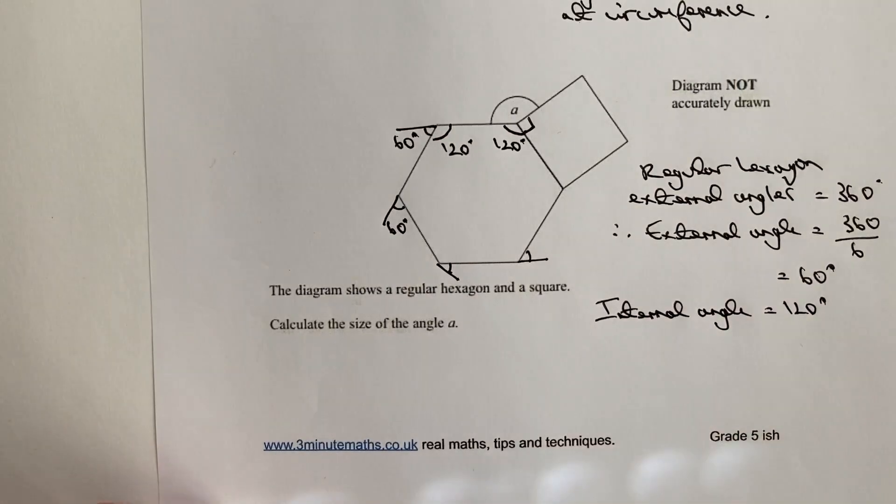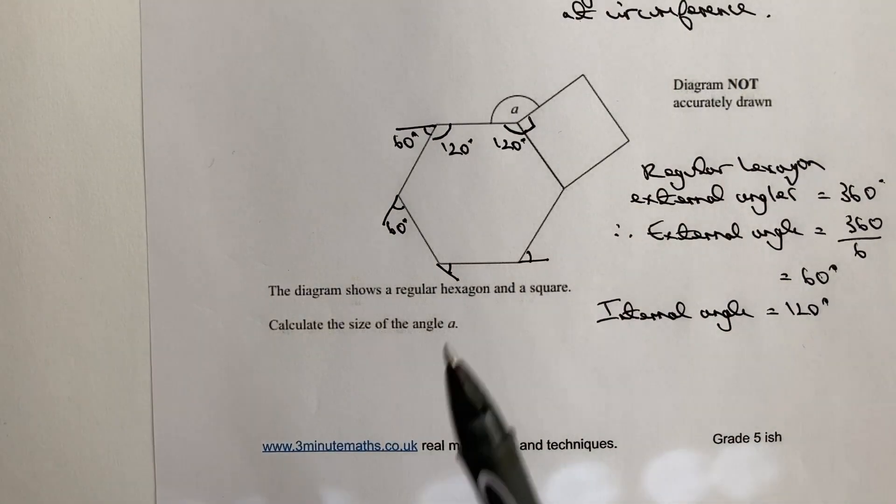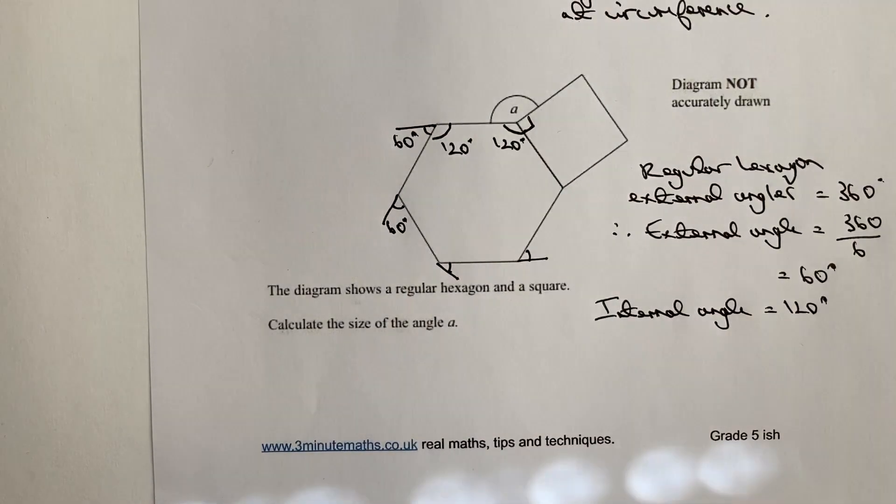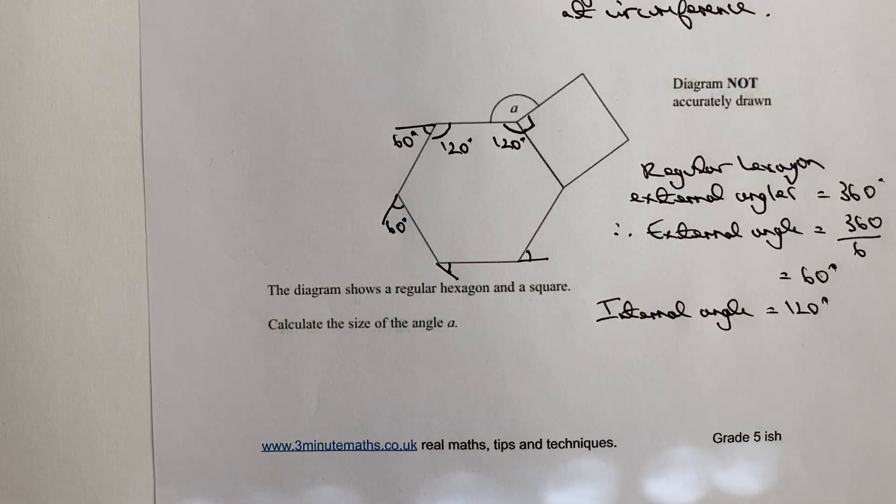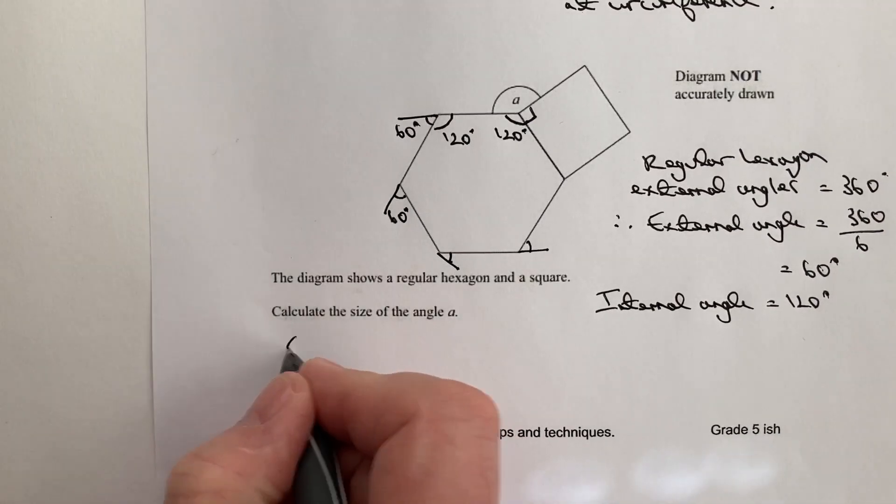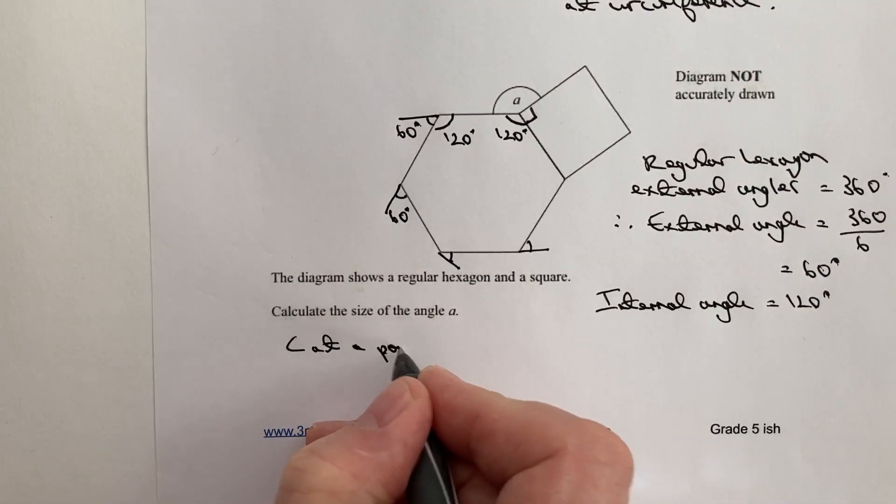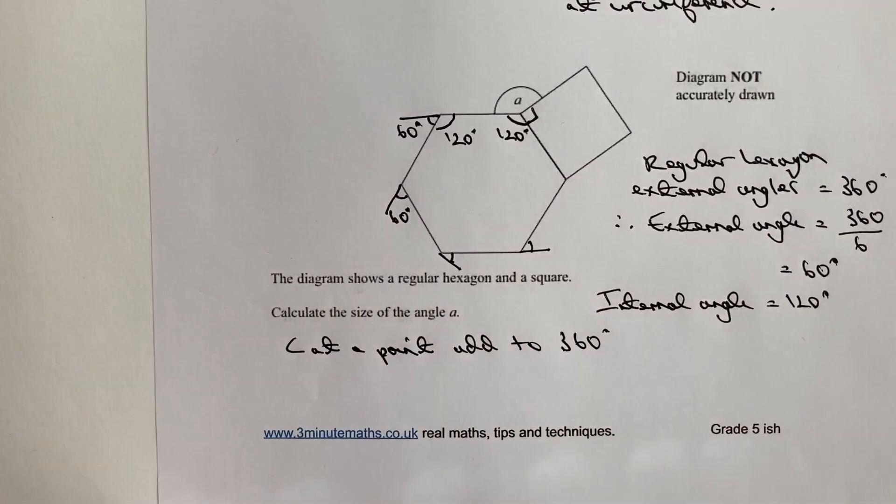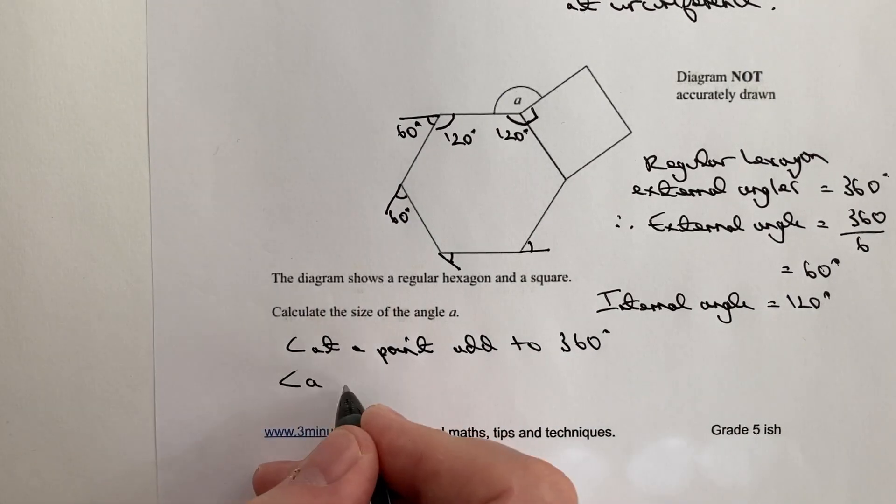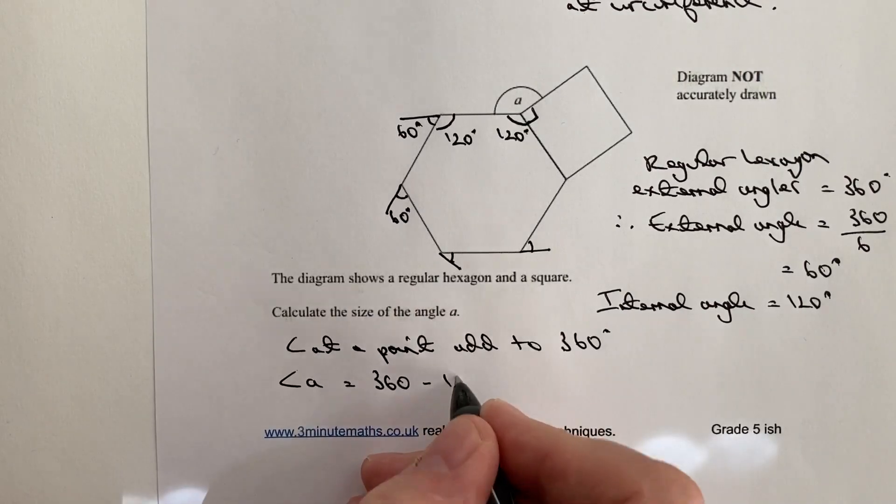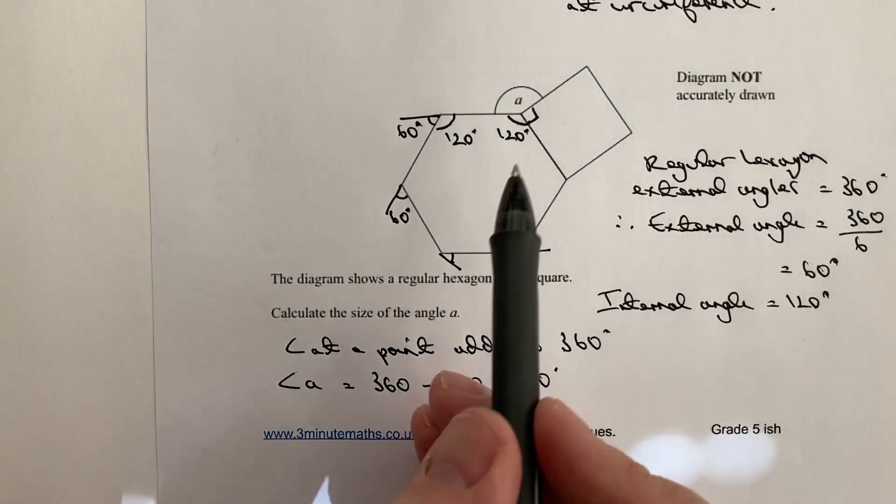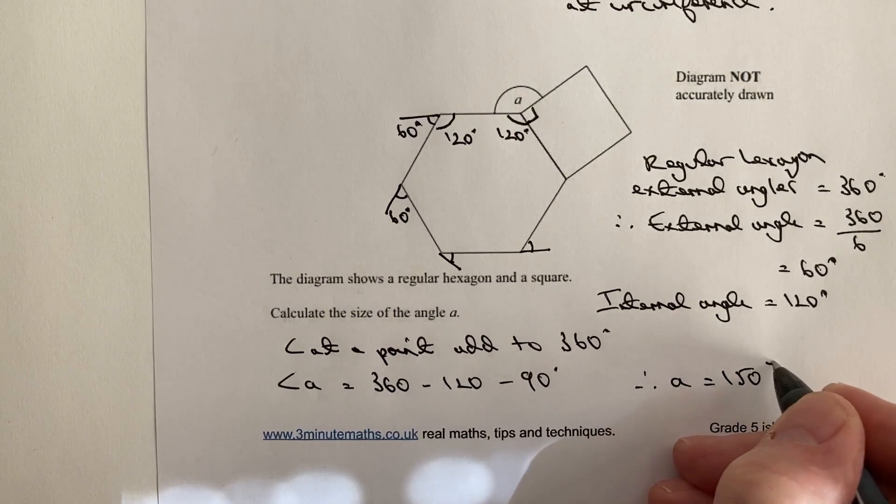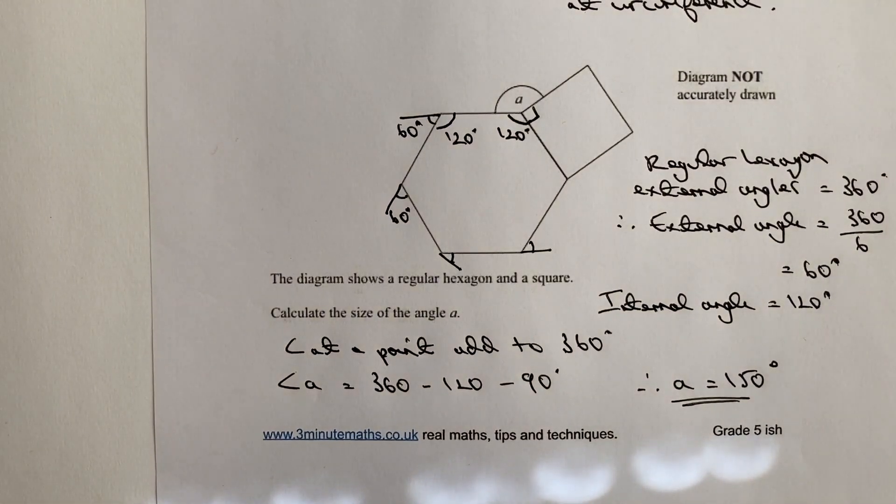So now we're in a situation where we know this is 90, we know this is 120, we also know that the angles at a point add up to 360 degrees. And then finally angle a equals then 360 minus 120 minus 90 degrees, so therefore a must equal 150 degrees, and that would be the answer to that particular question.